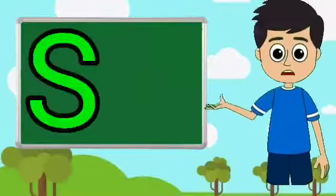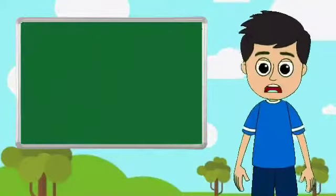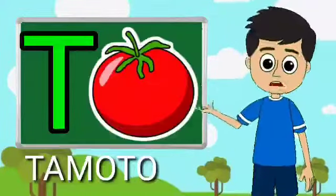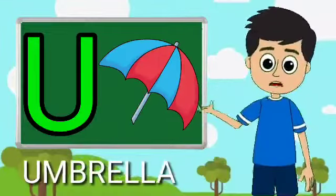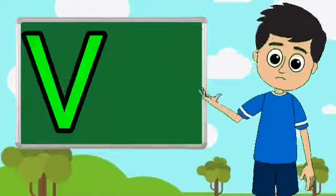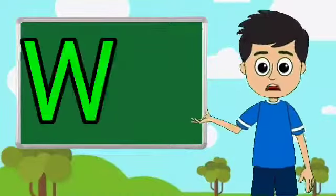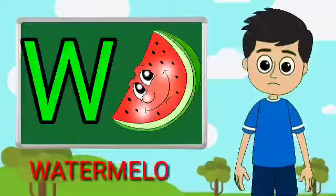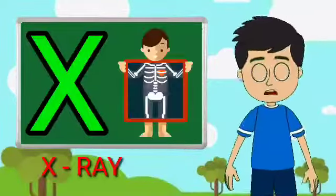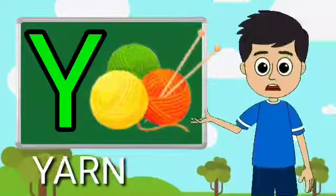S for sun, T for tomato, U for umbrella, V for band, W for watermelon, X for extra, Y for yarn.